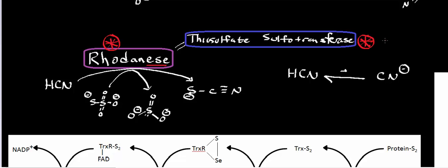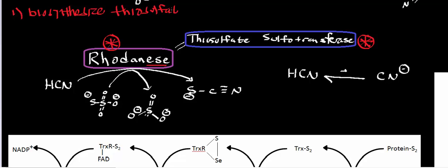Basically, what this enzyme does is two things. Number one, it's going to biosynthesize something called thiosulfate. Thiosulfate is similar to normal sulfate, although we'll see it has several really important differences. And then what it's also going to do is detoxify hydrogen cyanide.